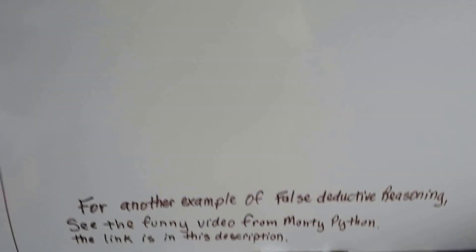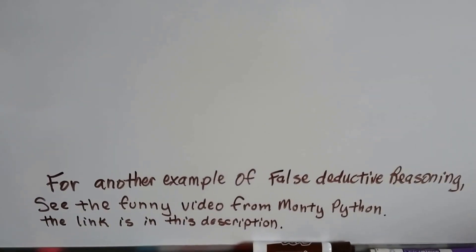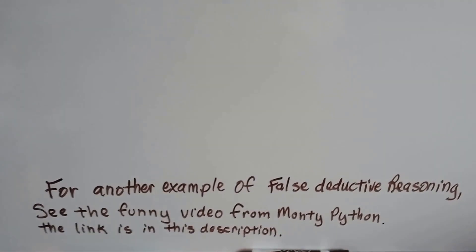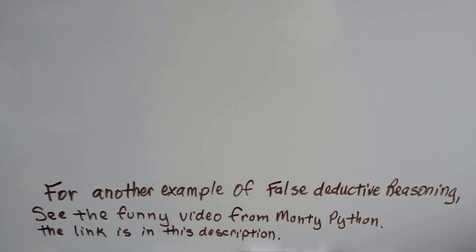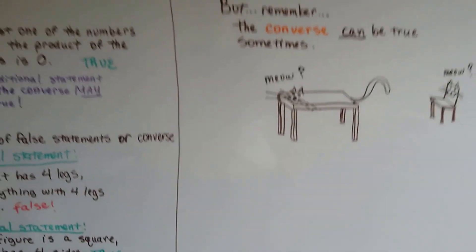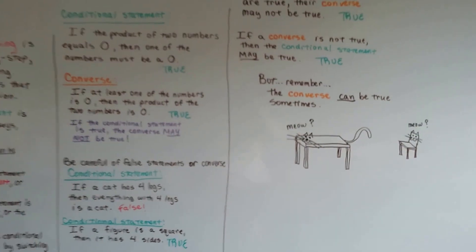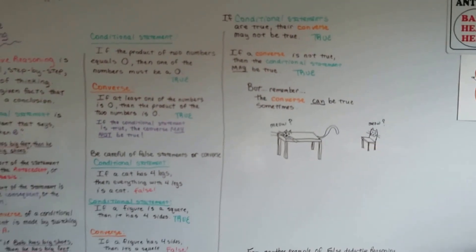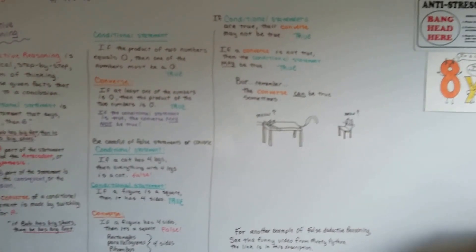Now, for another example of false deductive reasoning, there's a really funny video from Monty Python and the Holy Grail, and the link is in the description. We're going to talk about inductive reasoning in the next video, and that's what Sherlock Holmes used.